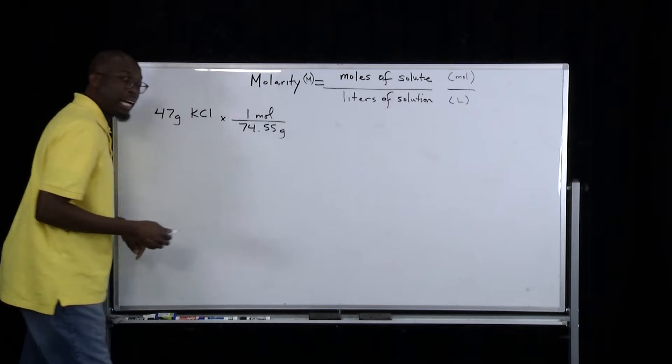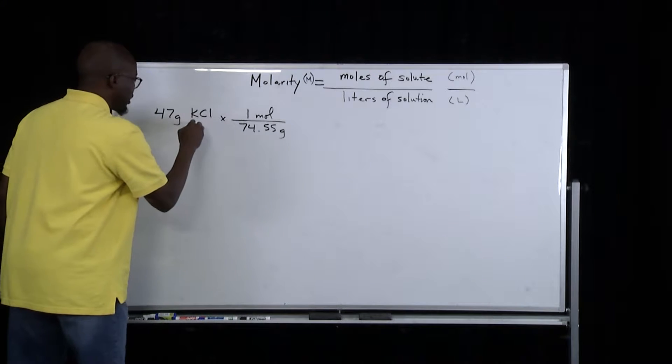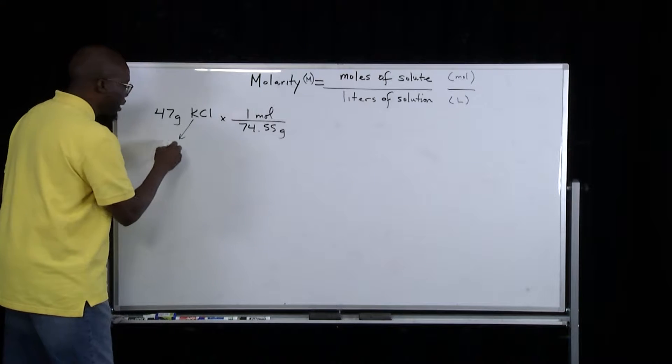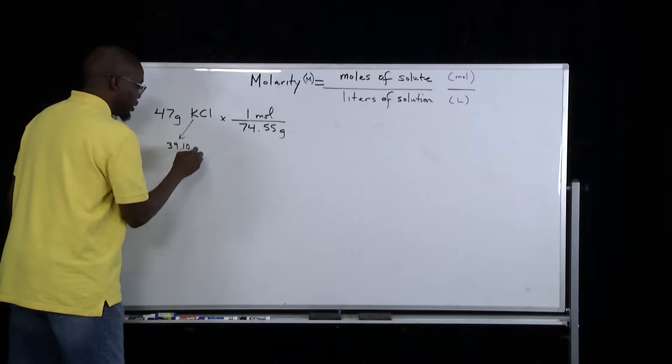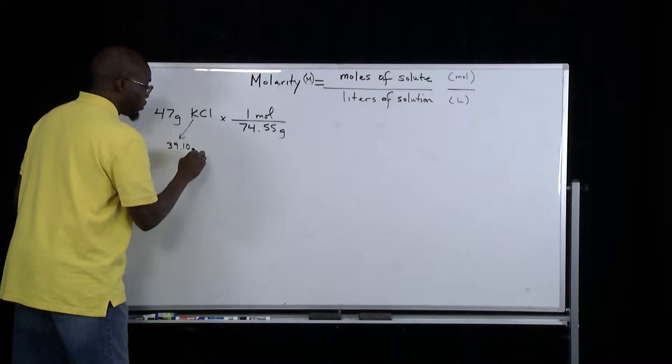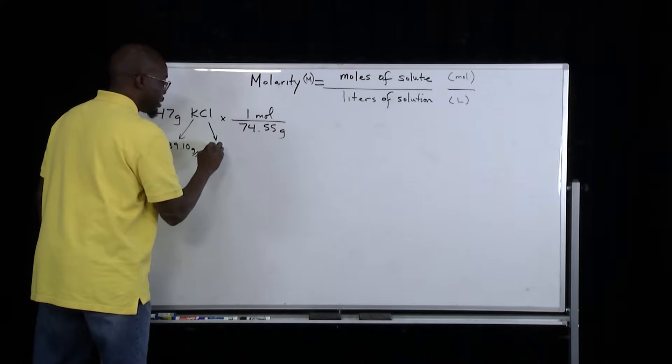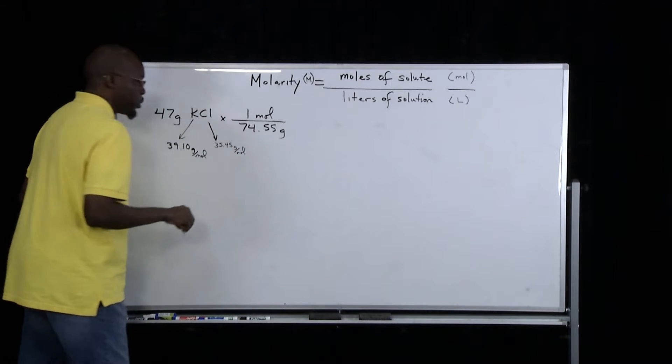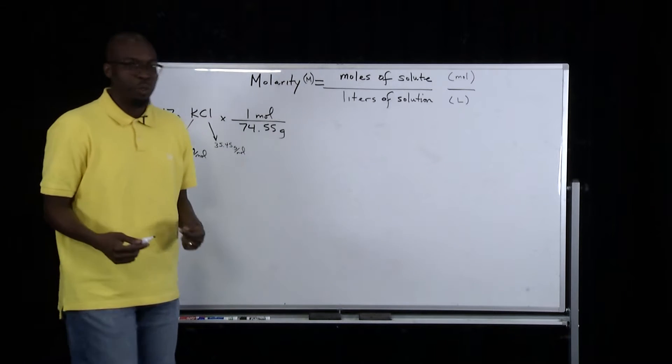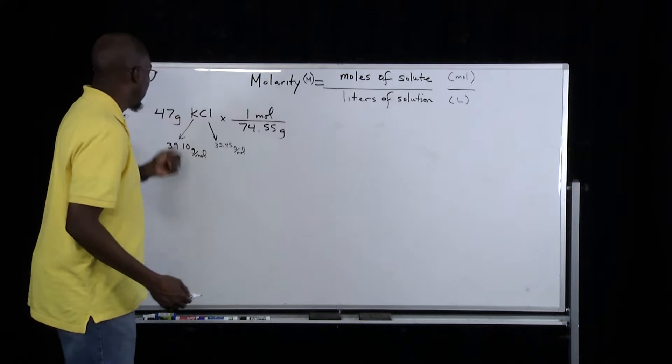If you're confused by the molar mass being 74.55, you must remember that from the periodic table, potassium has a molar mass of 39.10 grams per mole, and chlorine has a molar mass of 35.45 grams per mole. When you add those two values up, you get a molar mass for this formula unit of 74.55.